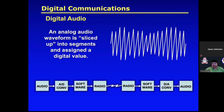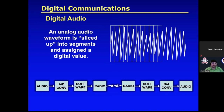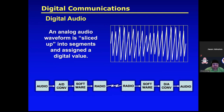Digital audio is an analog audio waveform sliced into segments and assigned a digital value. Audio goes from analog to digital conversion via software to the radio. On the receiving end, the radio passes it back through software for digital-to-analog conversion and back to audio. That's basically what digital is — broken into chunks, assigned a value, transmitted, and decoded on the other end.